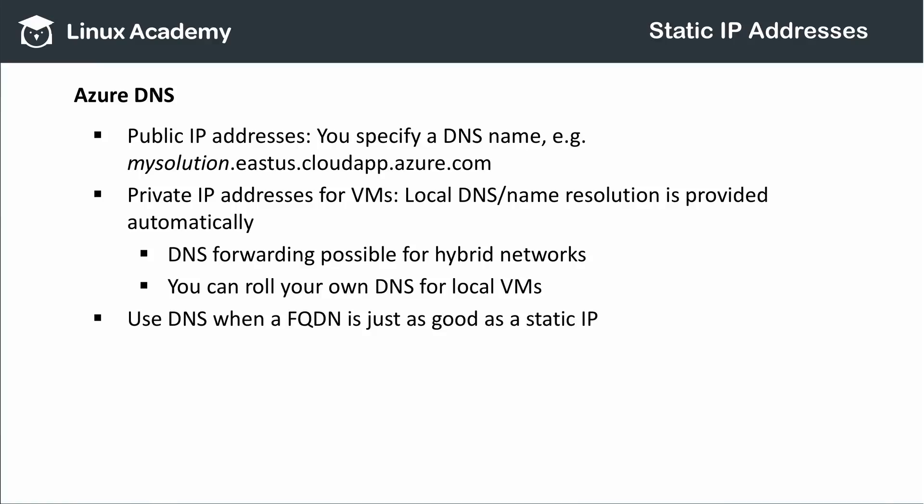Exam 70-534 probably won't ask you about how to do that, so I won't get into it here. But it's possible you'll be asked about the best way to address a resource. Generally speaking, you're better off using a fully qualified domain name instead of an IP address unless there is a compelling reason to use an IP address. If your situation allows you only to address resources via an IP address, use a static IP address. Otherwise, use domain names to resolve your resources — that allows Azure to properly route your requests with the least chance of misrouting something.